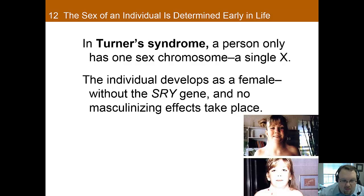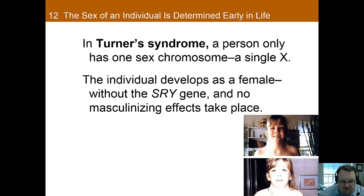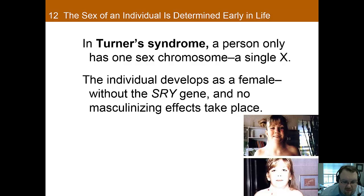As is the case with many of these chapters, we always discuss what happens when things go wrong or when development occurs differently. In sexual differentiation, there is a complex chain of events that must occur, and because of this, there are many possible places where the process can run into problems.